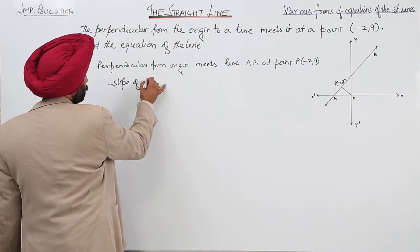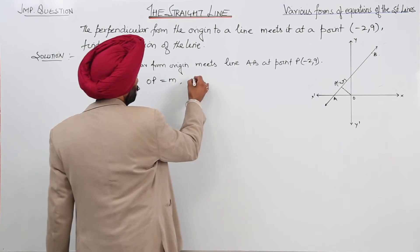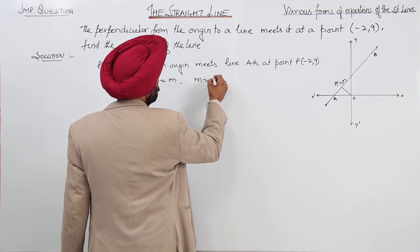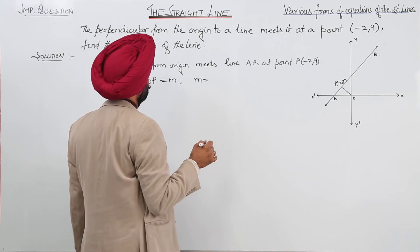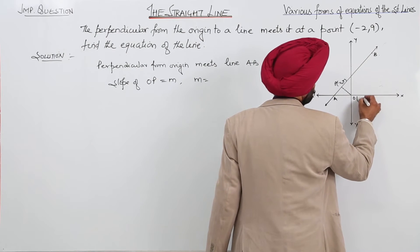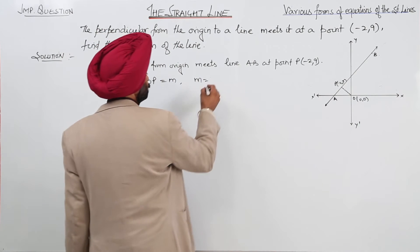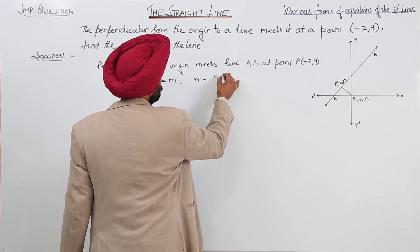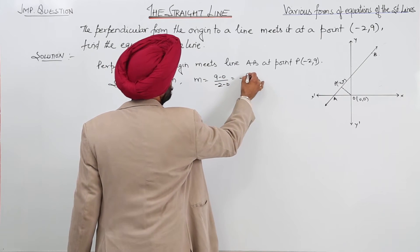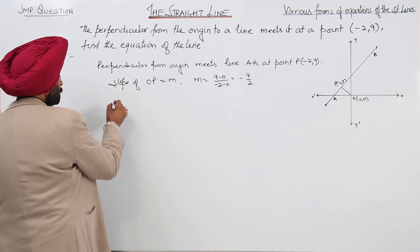Now, slope of OP is equal to M1. We have to find the slope. O is the origin, so its coordinates are 0, 0. Therefore, slope M1 equals 9 minus 0 upon minus 2 minus 0, that is minus 9 by 2.